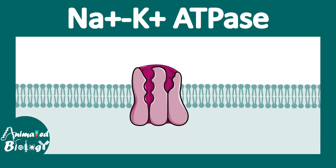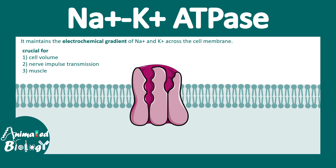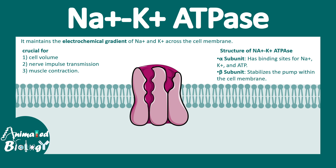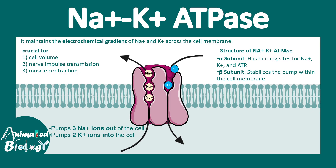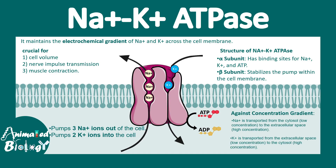Now we'll talk about P type ATPase, specifically the sodium-potassium ATPase, which is very common. The sodium-potassium ATPase maintains the electrochemical gradient of sodium and potassium across the membrane — crucial for cell volume regulation, neuronal resting membrane potential, and muscle contraction. It has two major domains: the alpha domain with sodium, potassium, and ATP binding sites, and the beta domain in the transmembrane region. Three sodium ions bind and are released to the extracellular side, while two potassium ions bind and are released into the cytoplasm.